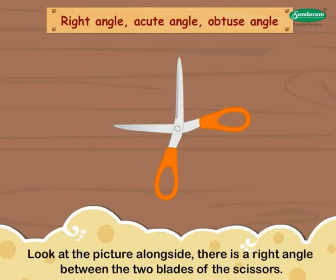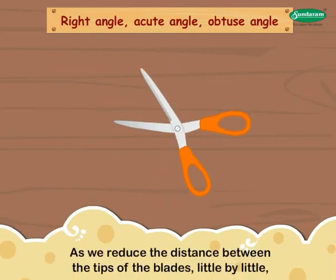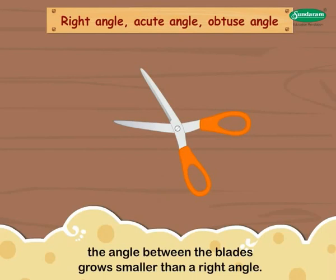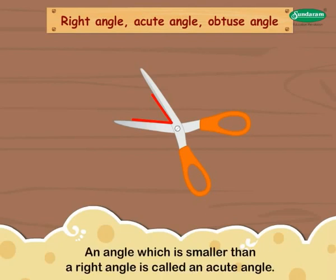Look at the picture alongside. There is a right angle between the two blades of the scissor. As we reduce the distance between the tips of the blades little by little, the angle between the blades grows smaller than a right angle. An angle which is smaller than a right angle is called an acute angle.